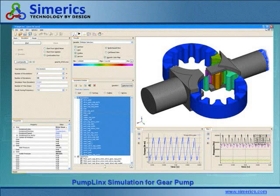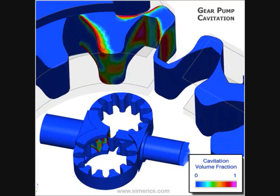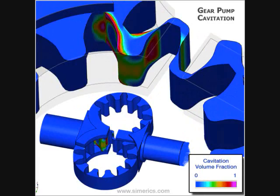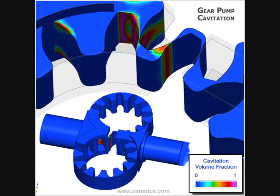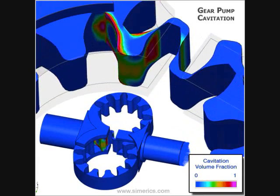The data and animations produced by Pumplinks typically match real test data to within 5% without any calibration. The type and extent of the data produced are the same as would be generated by a well-instrumented hardware test with extensive flow visualization.